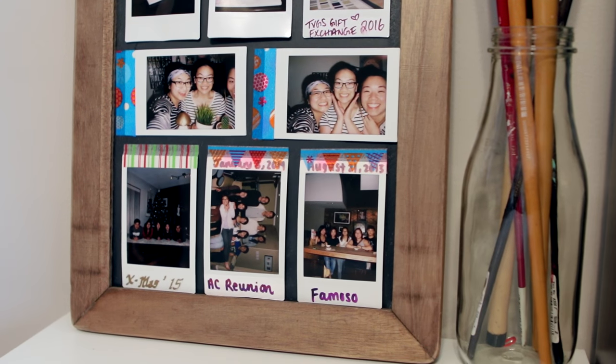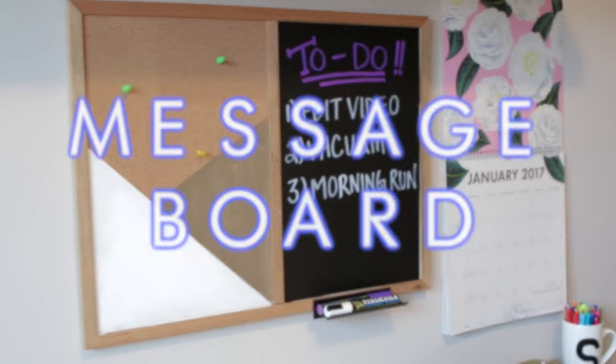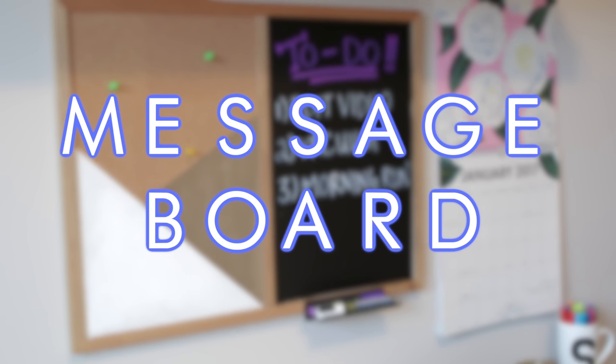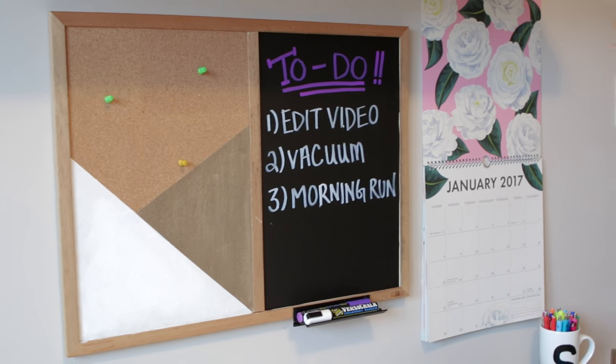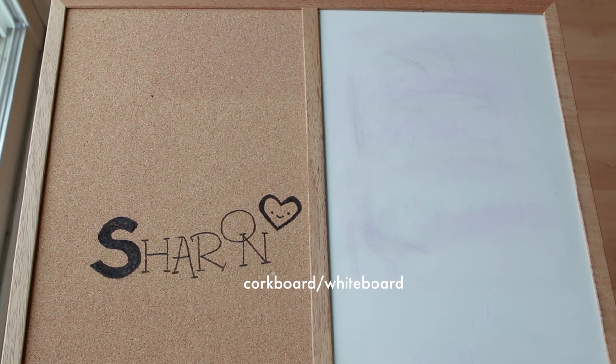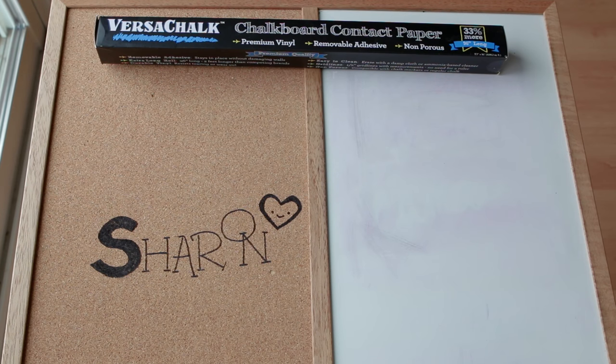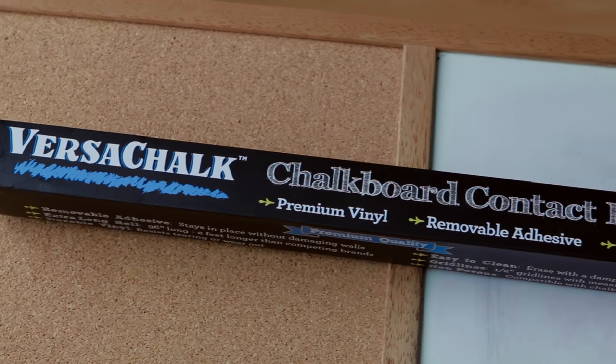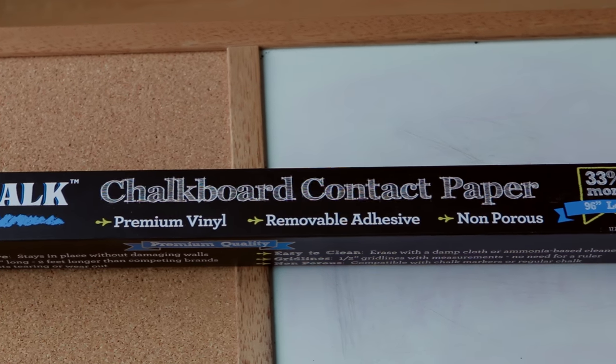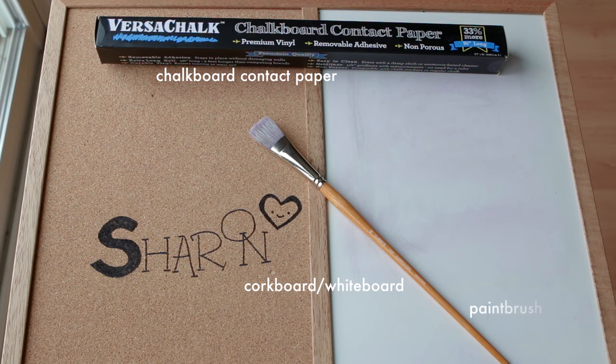So for this message board slash wall organizer, you're going to need either a corkboard or an old whiteboard. Maybe it's not working very well anymore and you don't know what to do with it. So the next thing you're going to need is some chalkboard contact paper. I got sent mine by a company called VersaChalk and they were nice enough to send me all the chalk related items in this video. They are definitely very high quality products and they get the job done. So I'll have a link to their website in the description box below so you guys can go check them out.